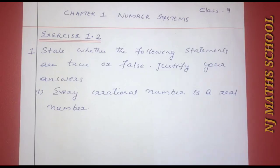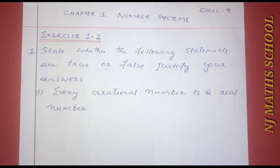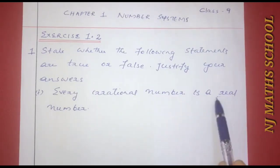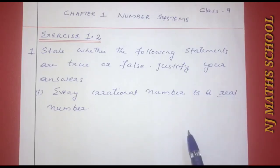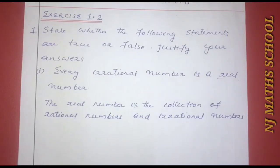Chapter 1, Number Systems, second exercise, first question: state whether the following statements are true or false and justify your answers. First statement: every rational number is a real number. This is true because real numbers are the collection of rational numbers and irrational numbers.